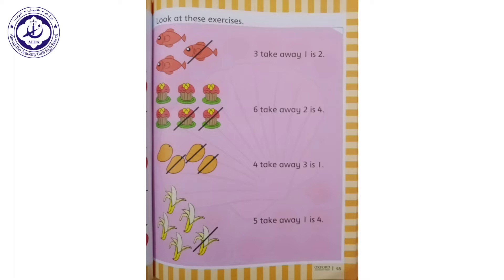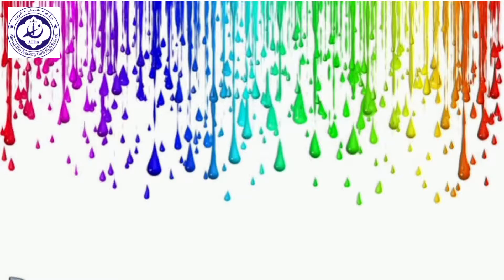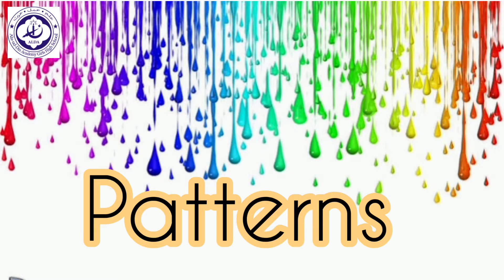Look at these exercises. There are three fishes — take away one, and how many are left? There are two fishes left. Next: there are six cupcakes — six take away two is four. There are four mangoes — four take away three is one. Five take away one is four.